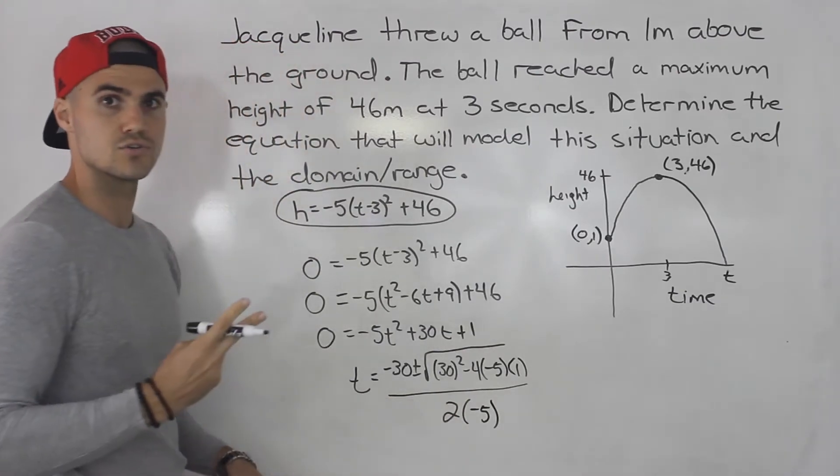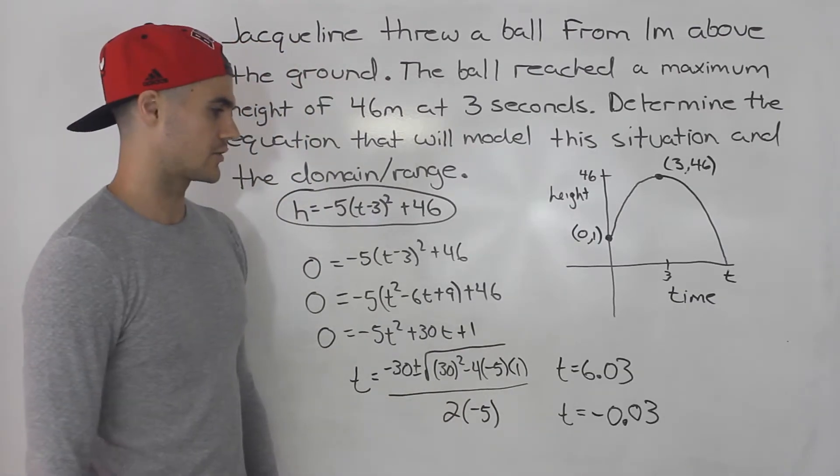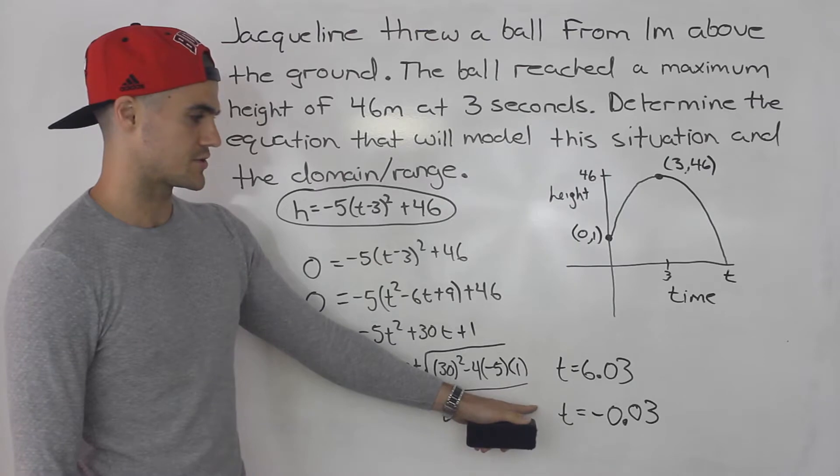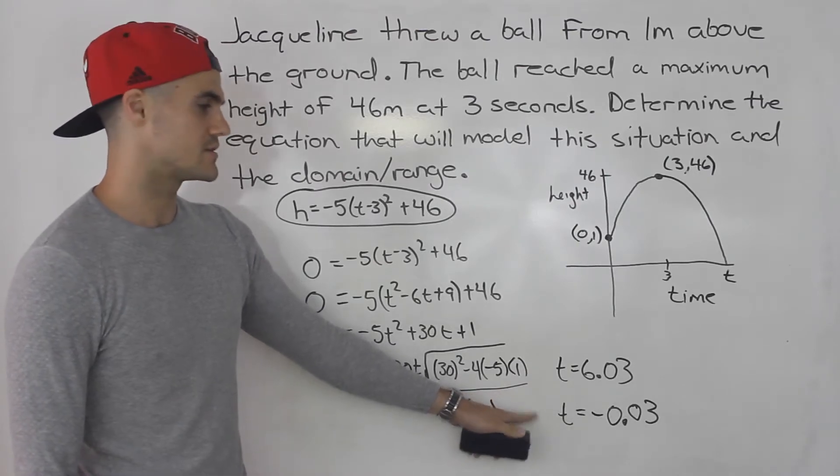And when you do this you're going to get 2 answers. And when you do that calculation you end up getting the 2 answers: 6.03 and -0.03.